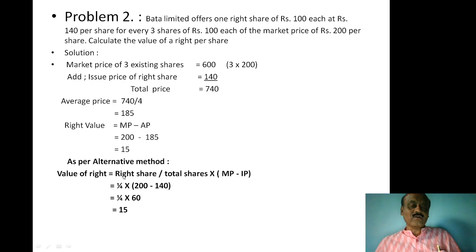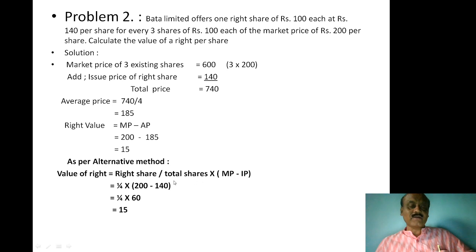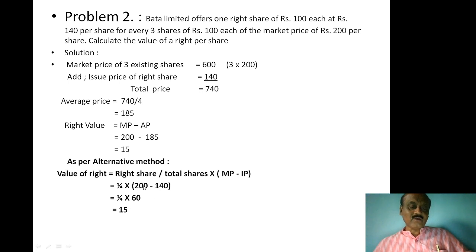Alternative method: value of right equals right shares divided by total shares, multiplied by market price minus issue price. Right share = 1, total shares = 4 (3 existing + 1 right), market price = ₹200, issue price = ₹140. So 1 ÷ 4 × (200 − 140) = 1/4 × 60 = ₹15. Value of right is ₹15.